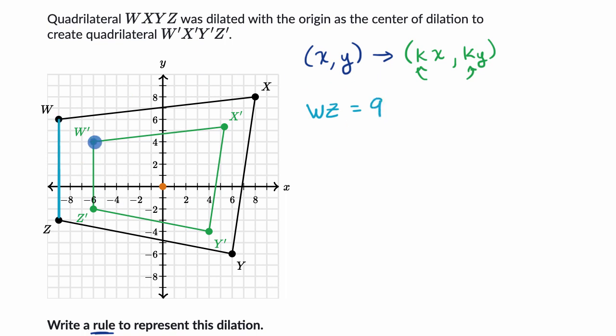And now let's see what W prime Z prime is. So W prime Z prime looks like it is one, two, three, four, five, six. It is six units. So it looks like when we went from WZ to W prime Z prime, we multiplied by two over three. So that gives us a pretty good clue that the scaling factor is two over three.